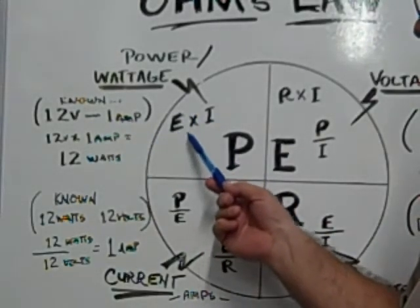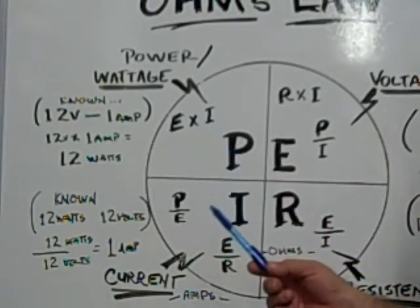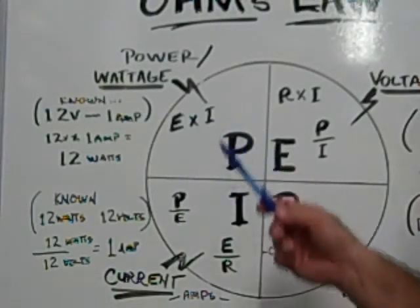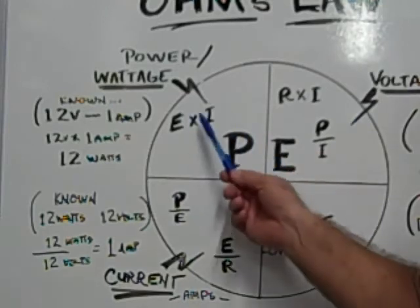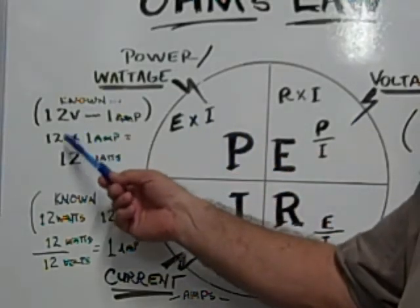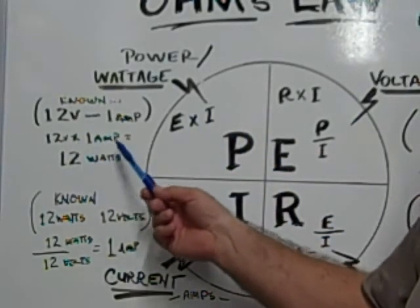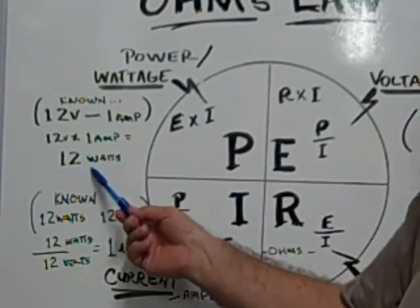That's indicated by E times I, which is voltage times current. So you take 12 volts times 1 amp and that equals 12 watts.